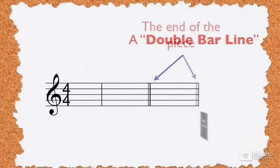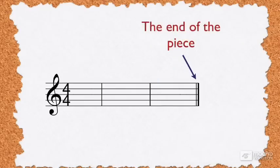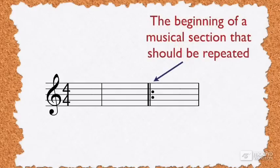A thin bar line followed by a thicker bar line indicates that you've arrived at the very end of the piece. A thick bar line followed by a thin bar line with two dots tells you that you're at the beginning of a musical section that should be repeated.